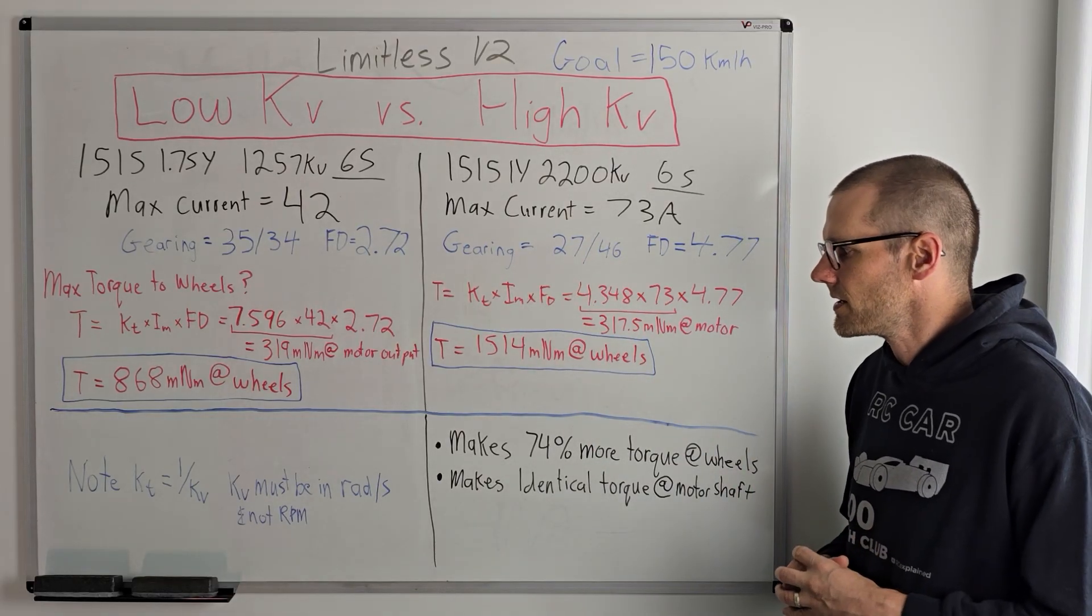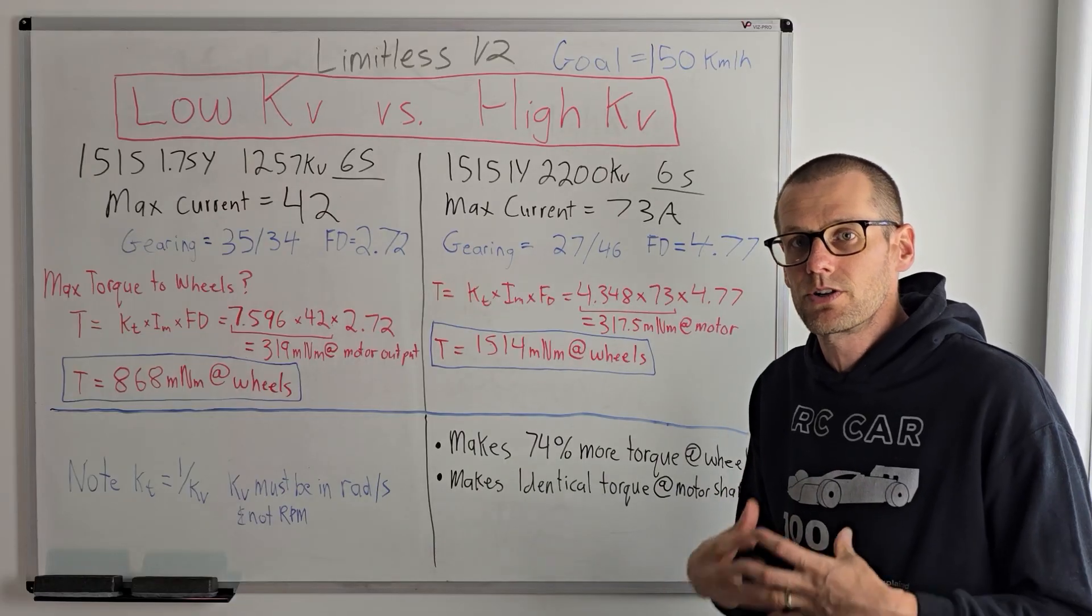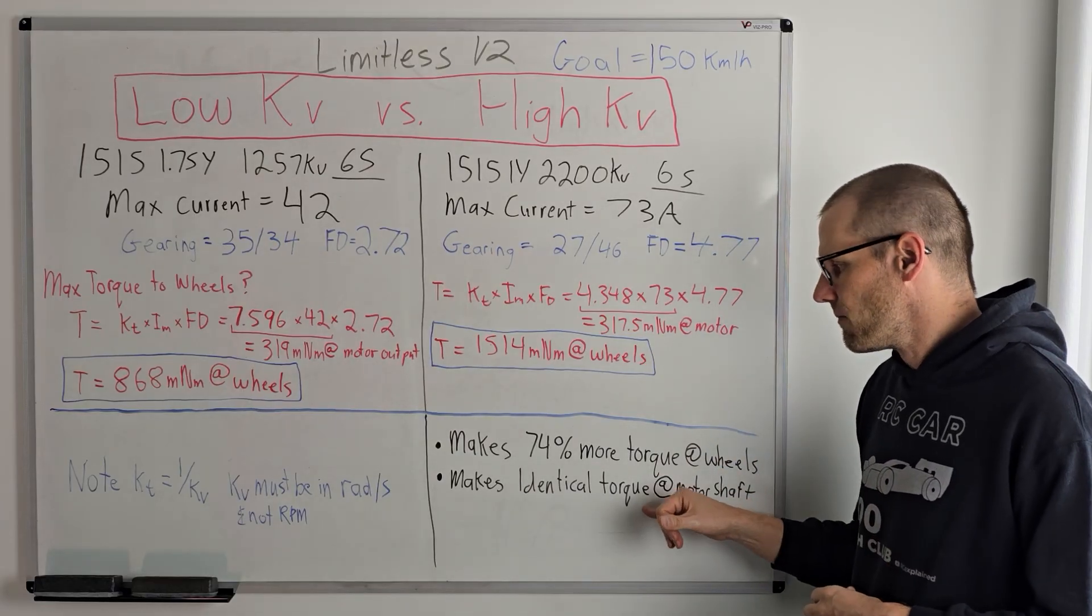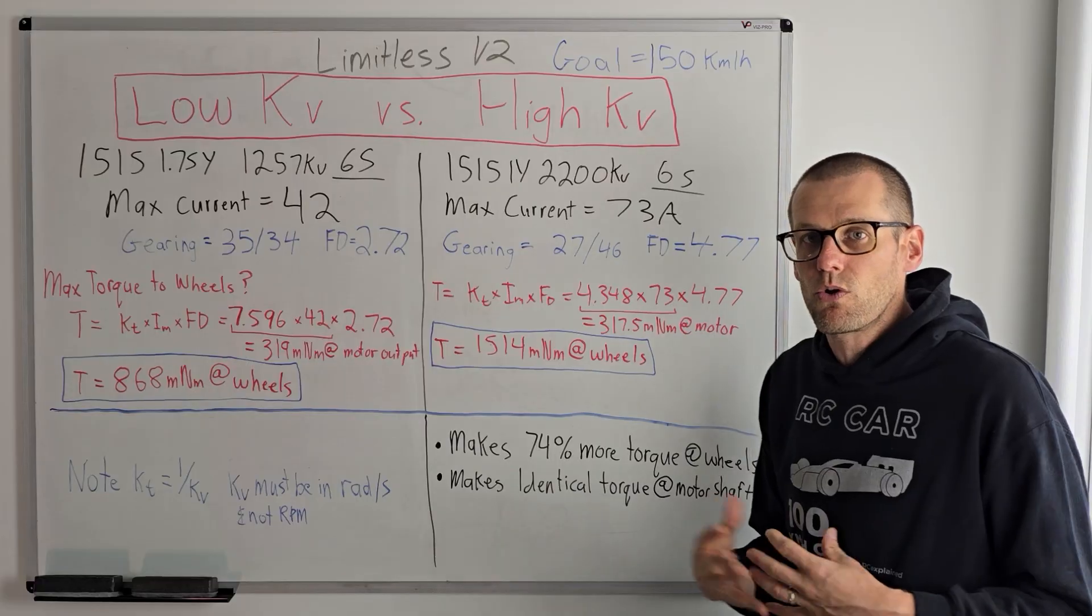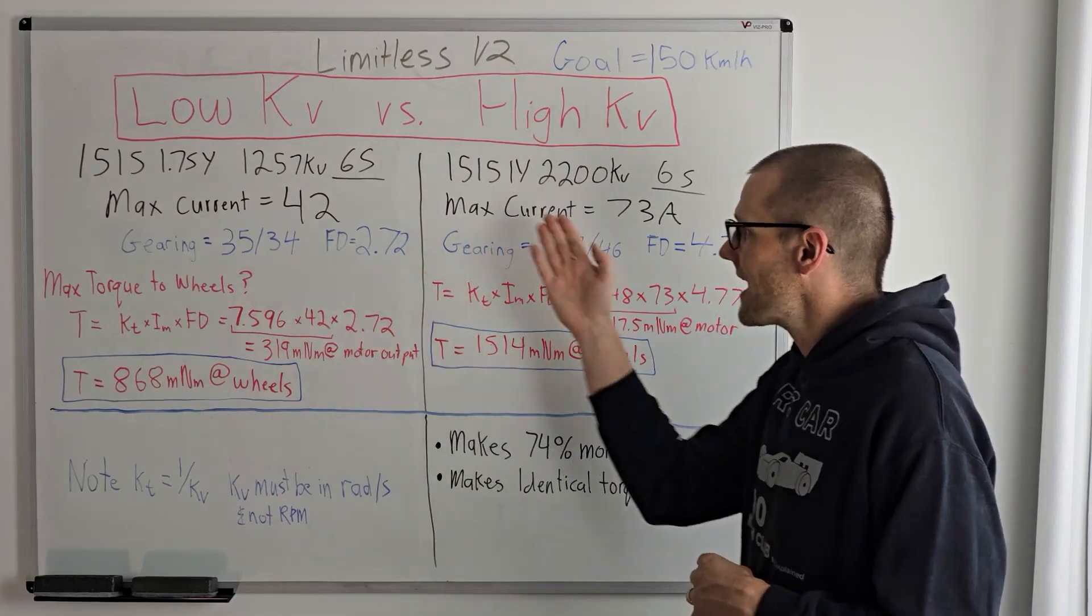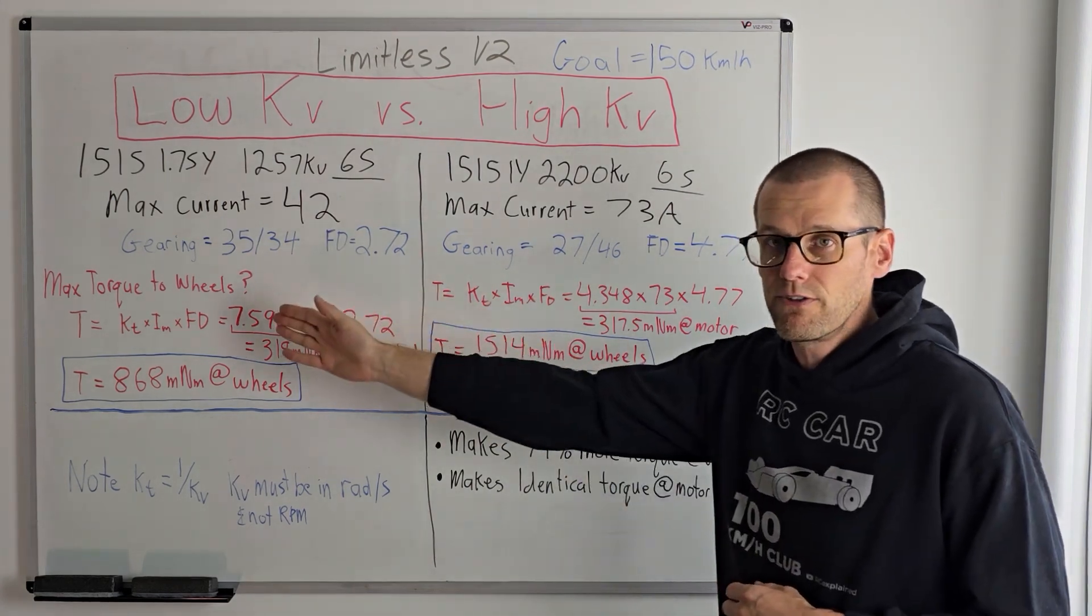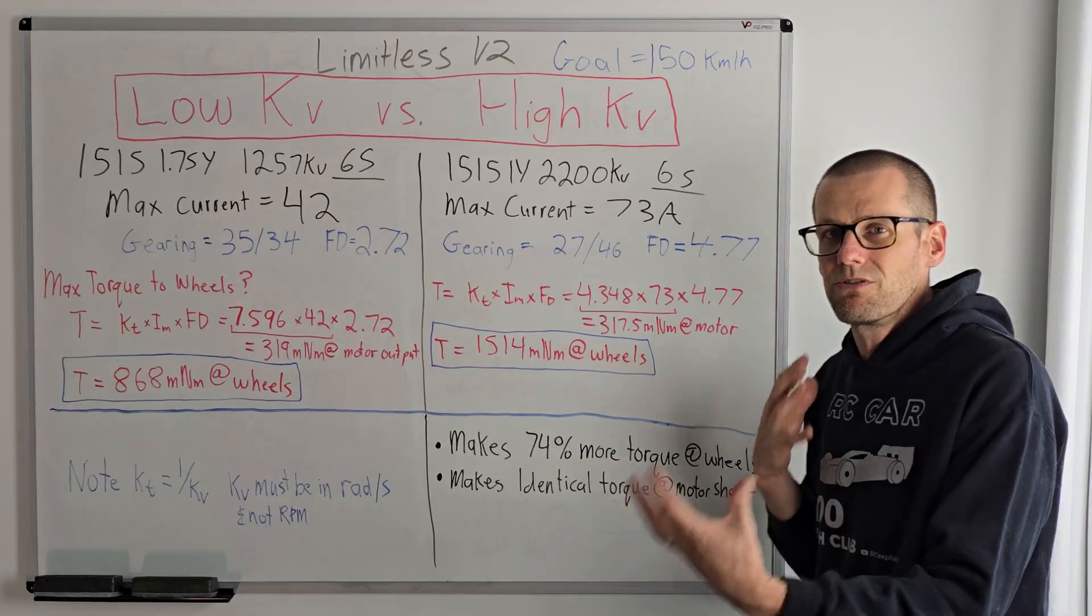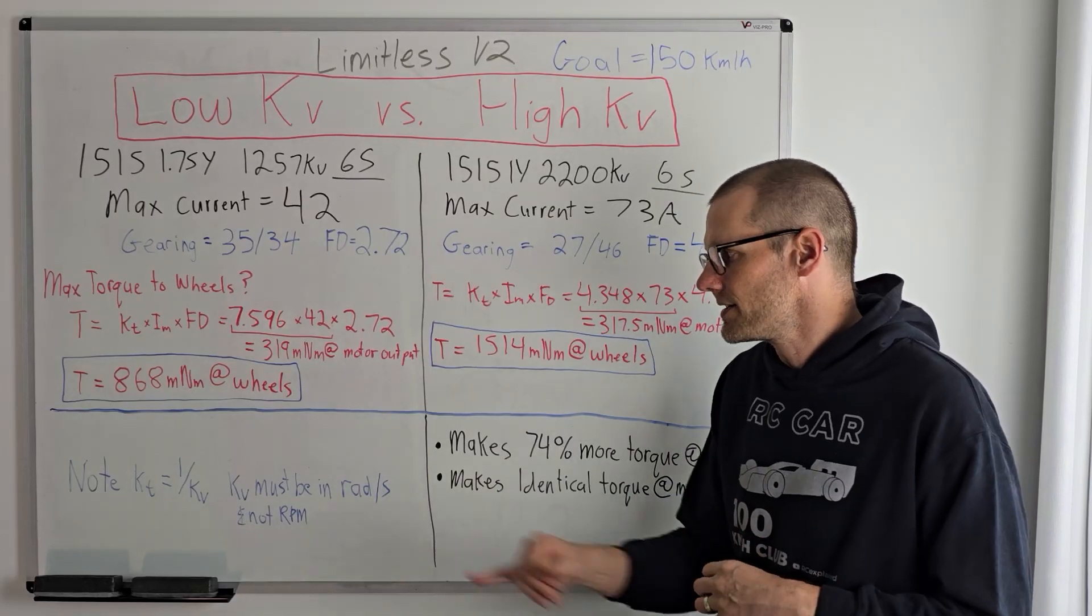Now, ultimately what we've determined here is that we are making 74% more torque at the wheels with our high KV brushless motor. And it makes identical torque at the motor output shaft. The only way that we can actually get more torque at our brushless motor is by taking this 42 and increasing it, getting that to a higher number. Of course, we're going to be overdriving the motor based on the motor manufacturer specifications. But if you can do it here, you can do the exact same thing here. If you're going to go and increase this and actually run this motor at 50 or 60 over amp it, it's going to get hotter for sure. But you can do the same thing here with our high KV motor. Take the 73 and raise that just by the same percentage. So that really doesn't help us compare these two different brushless motors.